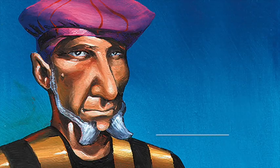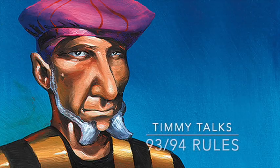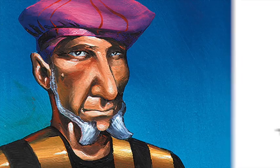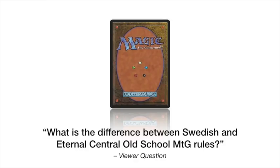Welcome to another episode of Timmy Talks, the channel where we talk old school Magic. Today we are going to talk about old school Magic rules because I'm getting more and more questions from you, the viewer, about the difference between Swedish and Eternal Central rules. In this video I'm going to explain that and also give you some useful links where you can find more information about the different rule sets.